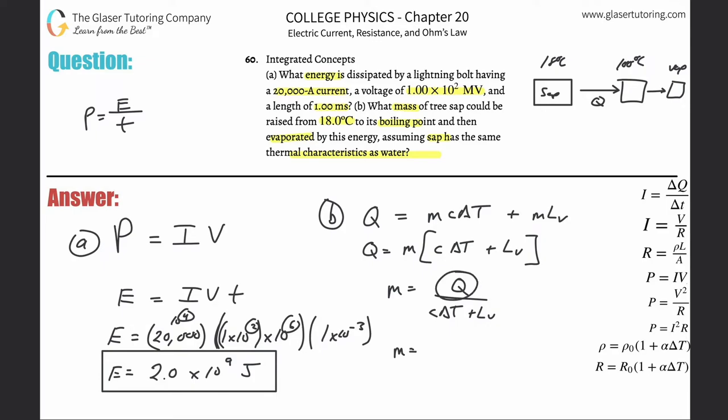The Q value here is the energy being supplied by the lightning, so that's 2 times 10 to the ninth. Divide that by the specific heat of water, which is 4,184 per kilogram. Be careful if you're doing chemistry at the same time because the decimal goes there. Multiply by the change in temperature. The final temperature is 100 and the initial is 18.